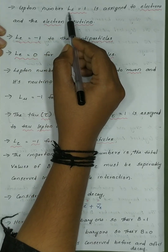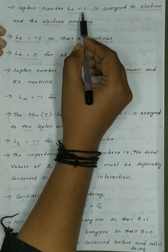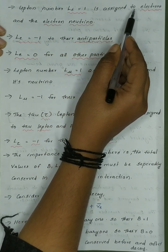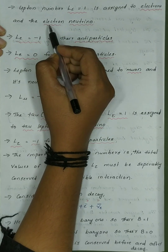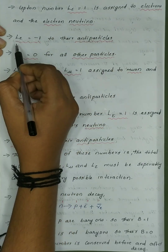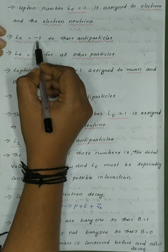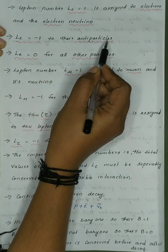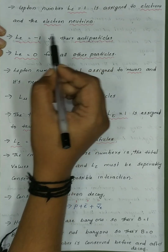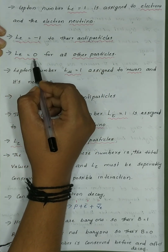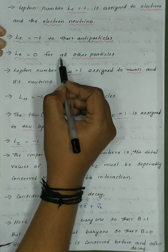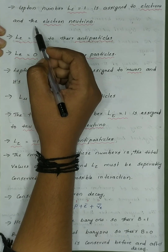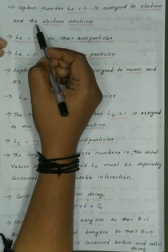Lepton number L_e equal to 1 is assigned to the electron and the electron neutrino. L_e equal to minus 1 is assigned to their antiparticles, and L_e equal to 0 for all other particles. Leptons come in 3 families.